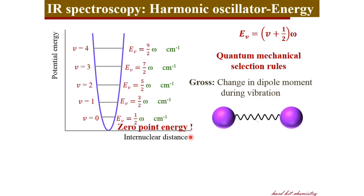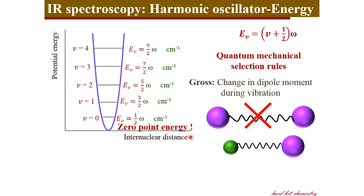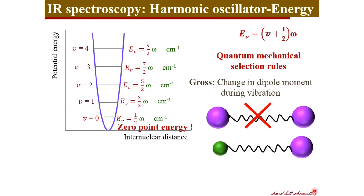Looking at a homonuclear diatomic molecule, during vibration there is no change in dipole moment because the molecule is non-polar — no charge separation is there. Therefore, such molecules are IR inactive. On the other hand, if you have a heteronuclear diatomic molecule, the molecule is polar, there is a charge separation, and during vibration the dipole moment changes because dipole moment is a function of both the charge separation and the distance of separation. During vibrational motion the distance of separation is varying, therefore the dipole moment varies sinusoidally, making the molecule vibrationally active.